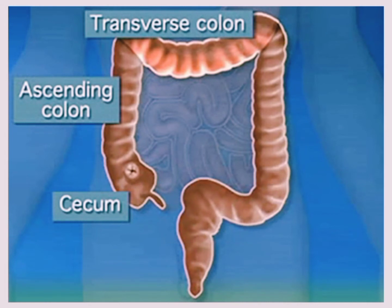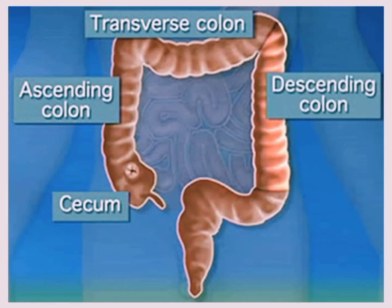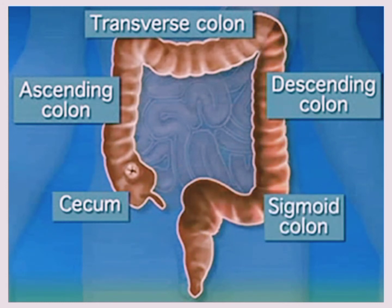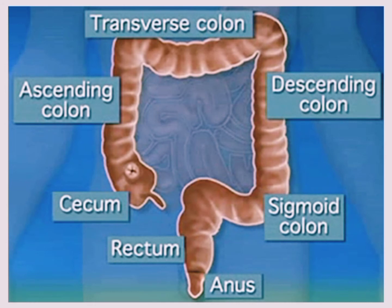The third section is called the transverse colon, since it goes across the body from the right side to the left side, where it joins the descending or downward colon, which continues down the left side until it reaches the sigmoid colon, named for its S-shape. The sigmoid colon joins the rectum, which in turn joins the anus, the opening where waste matter, bowel movements, or stool pass out of the body.